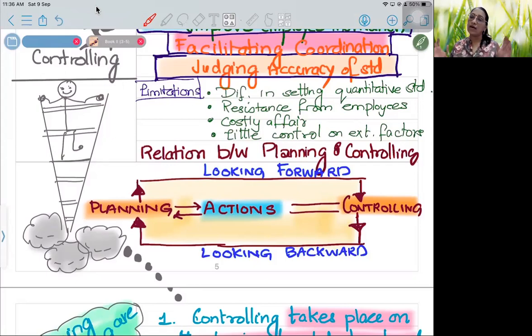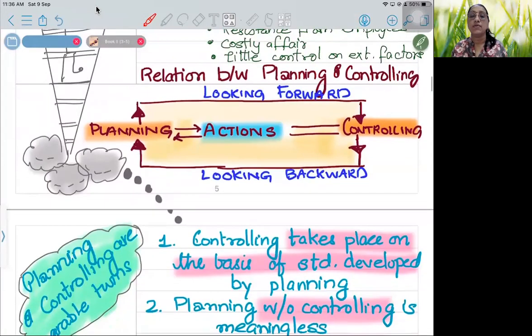Costly affair - because for controlling you need to make systems. Like nowadays ERP system is there, attendance system is there, CCTV camera system is there. Similarly, in companies also there are so many systems. And external factors you cannot control.